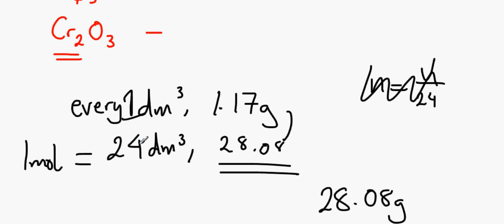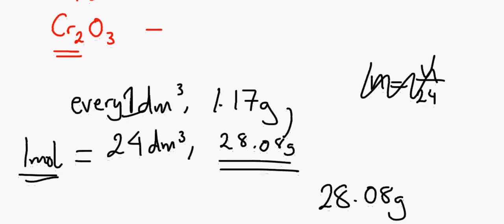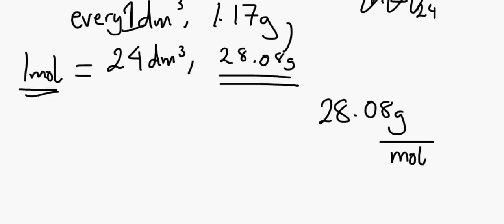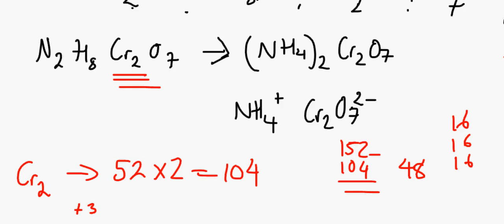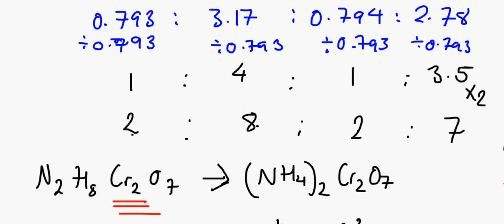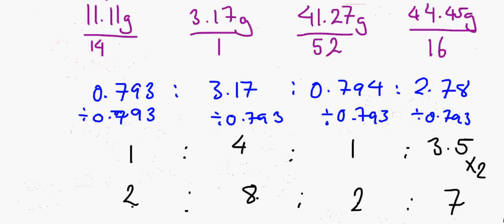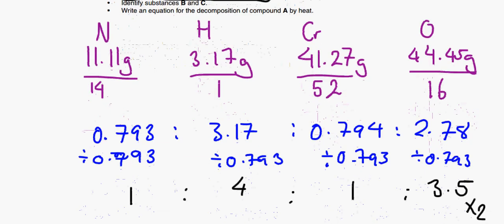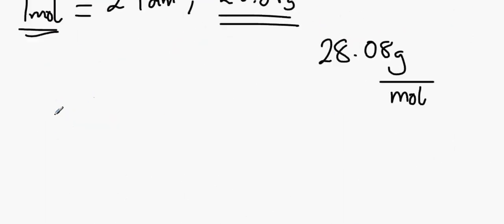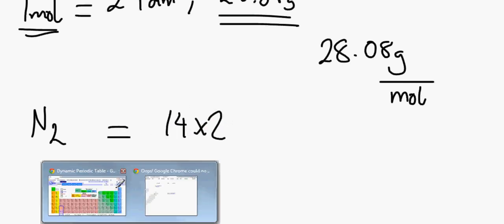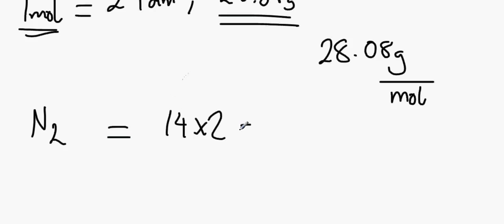We don't even need to look at the periodic table. By elimination, we know we have water and the chromium ions accounted for. The only things remaining are nitrogen atoms. Therefore it has to be nitrogen, specifically N2. 14×2 = 28, and that's a fitting description of compound C with a molar mass of 28.08 g/mol.